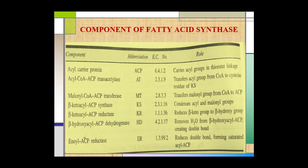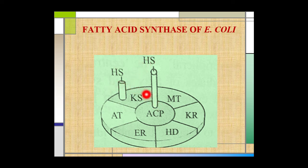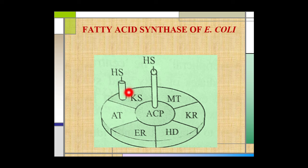These are the seven components of the fatty acid synthase enzyme complex of E. coli. Throughout the process of fatty acid synthesis, the intermediates remain covalently attached to one of two thiol groups of the complex. The two SH groups are designated as central and peripheral. The central thiol group is the SH group of the acyl carrier protein ACP, with which intermediates form a thioester. The peripheral one is the SH group of the cysteine residue in beta-keto acyl ACP synthase.